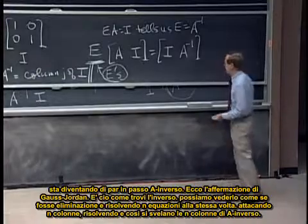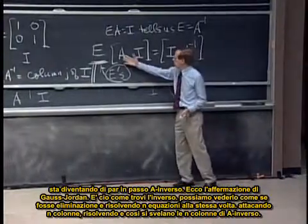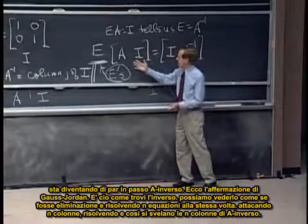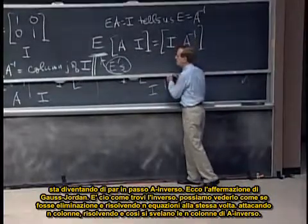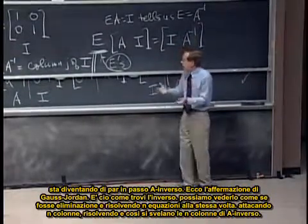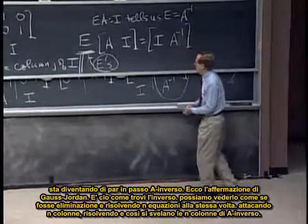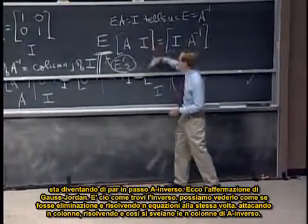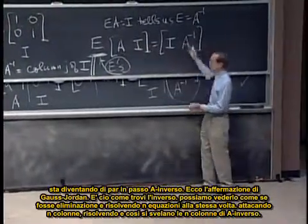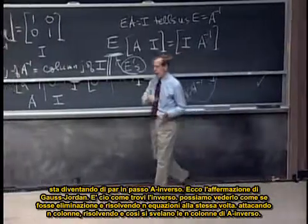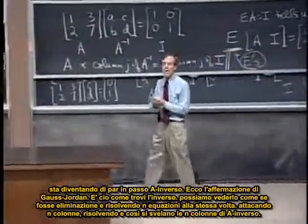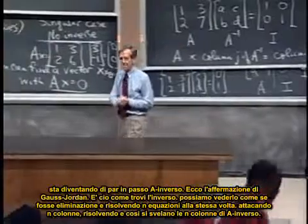There is the statement of Gauss-Jordan elimination. That's how you find the inverse. We can look at it as elimination, as solving n equations at the same time. And tacking on n columns, solving those equations shows the n columns of A inverse. Okay, thank you. See you on Wednesday. Thank you.